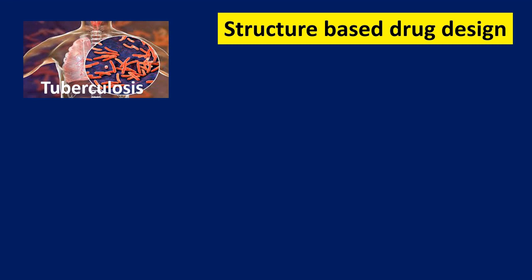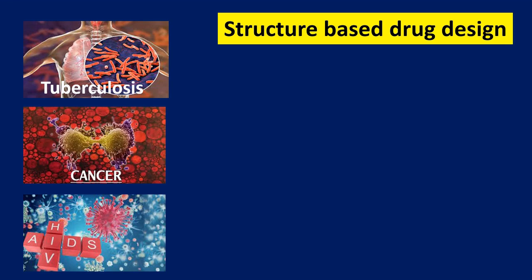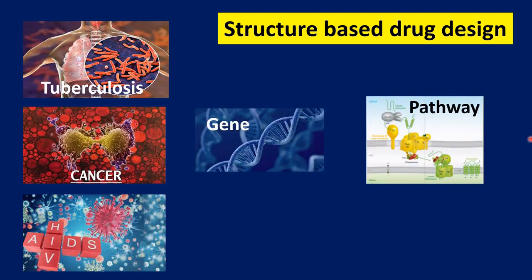In structure-based drug design, we consider diseases like tuberculosis, cancer, and HIV/AIDS. Physical conditions, stress-related factors, human behavior, and habits all lead to these diseases. Crucially, what happens inside the body is that external factors cause alteration in the gene pathway. As a result, genes become over-expressed, over-expressed proteins are produced, and these over-expressed proteins cause the disease.